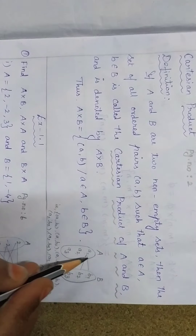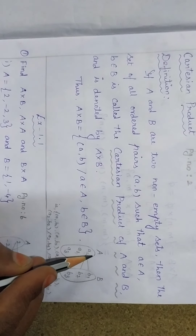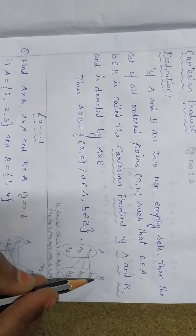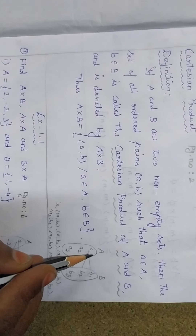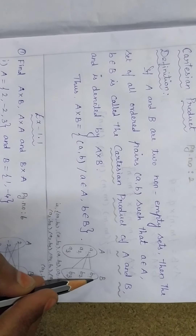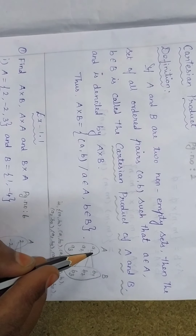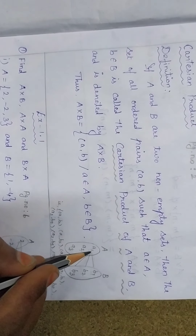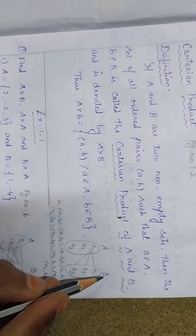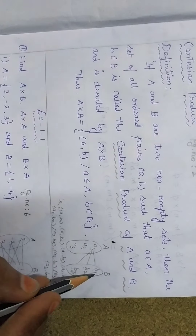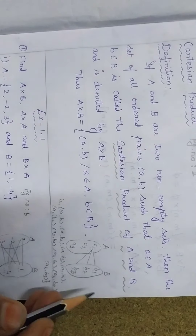For example, consider any two non-empty sets A and B. The set A is called the domain and B is called the co-domain. The set A has three elements A1, A2, A3 and the set B has three elements B1, B2, B3.